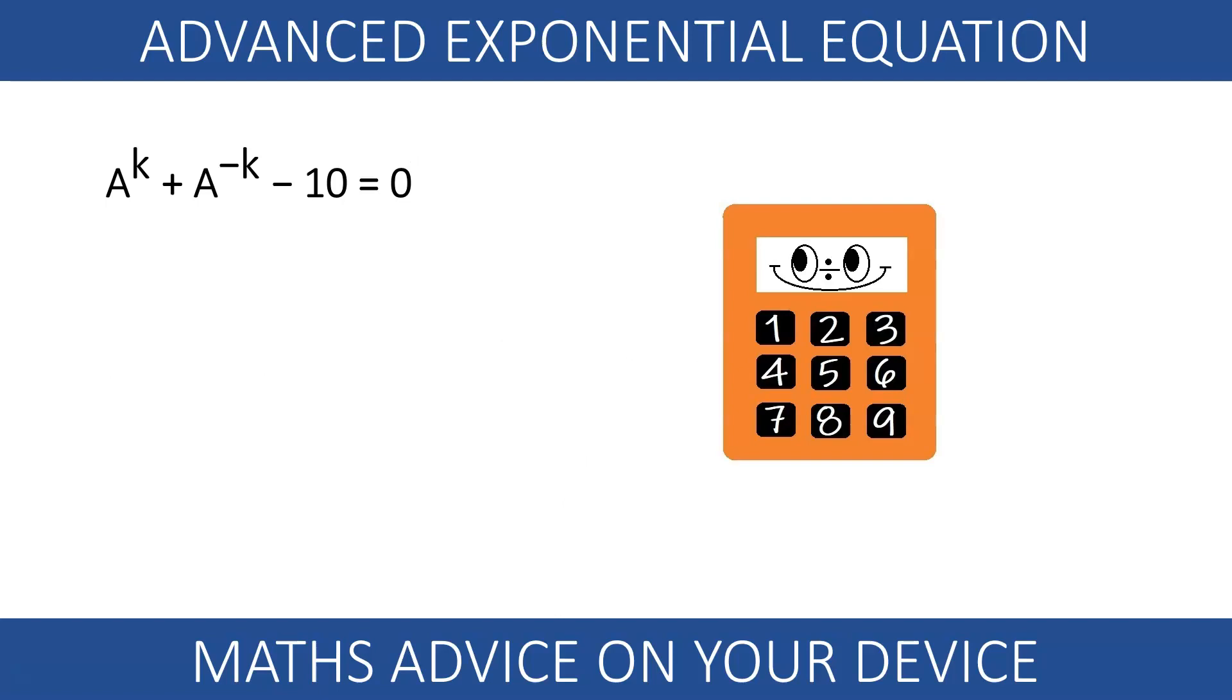Don't believe it? Check this out. Multiplying both sides by a to the k, we end up with m squared minus 10m plus 1 equals 0.